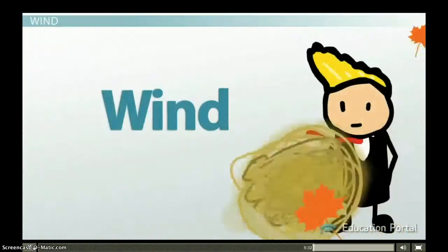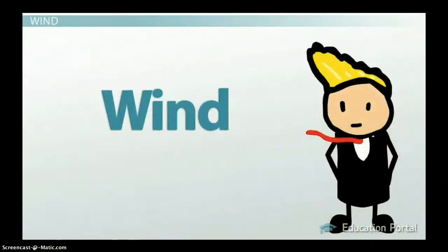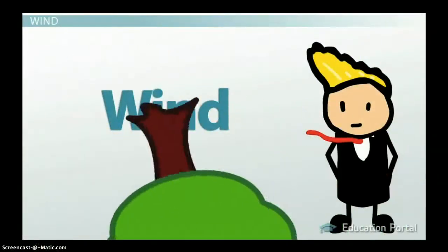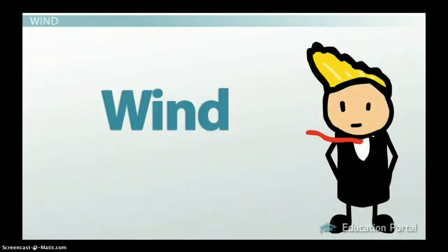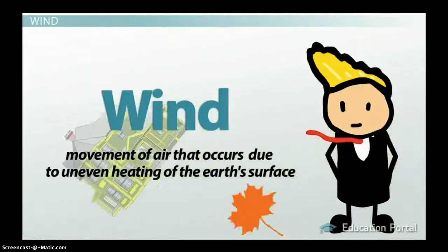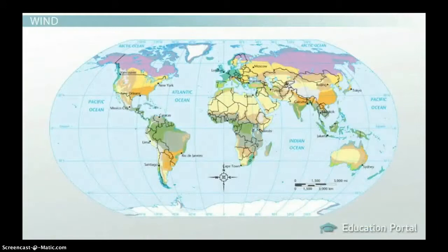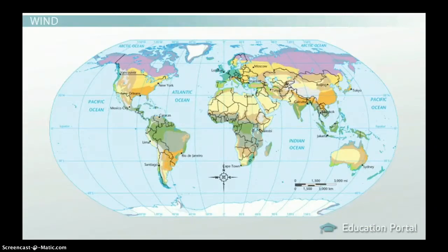Finally, wind can be a factor determining weather, particularly its speed and direction. Wind is a process of movement of air that occurs due to the uneven heating of the earth's surface. Different parts of the earth heat at different rates depending on factors like the amount of water present, snow cover, and vegetation.